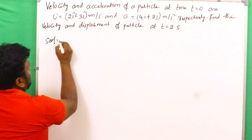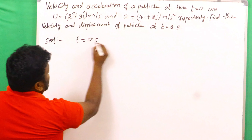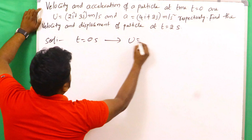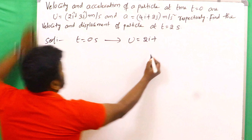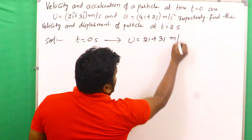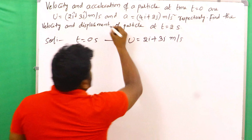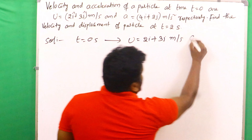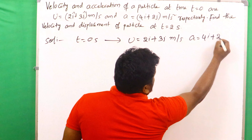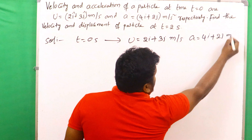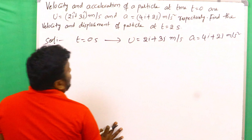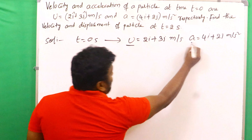At time t equals zero seconds, the initial velocity given is 2i plus 3j meter per second, and the acceleration given is 4i plus 2j meter per second squared. These are the given values when time equals zero seconds.